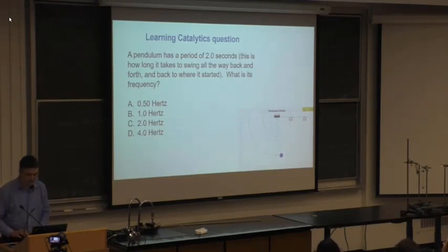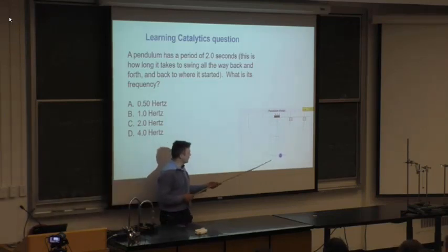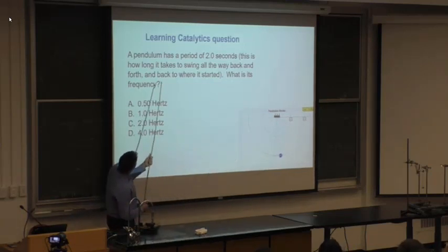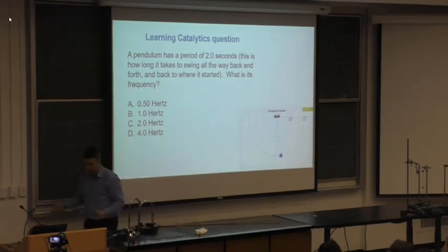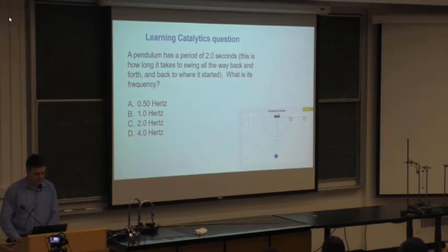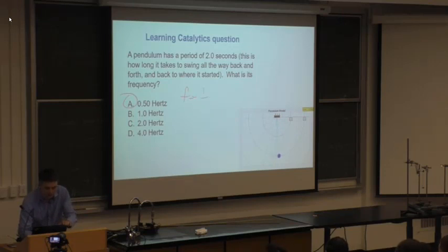Here's a pendulum — a 'seconds pendulum' from Wikipedia — with a period of two seconds, going back and forth once every two seconds. What's the frequency? The answer is 0.5 Hz: frequency = 1 / 2 seconds = 0.5 s⁻¹, which you can call 0.5 hertz.